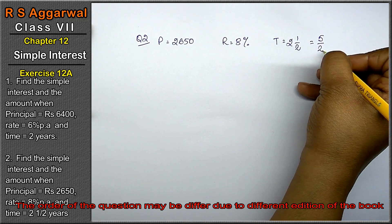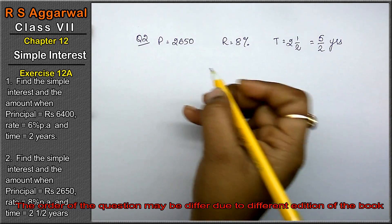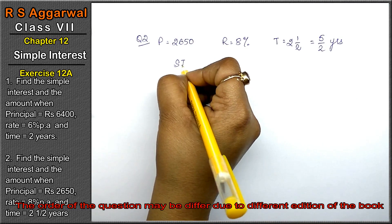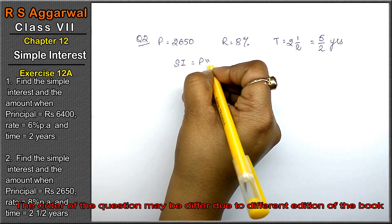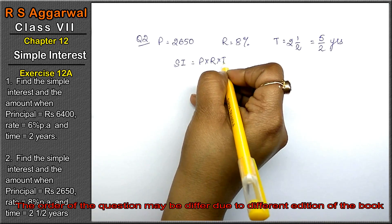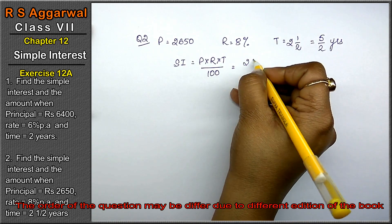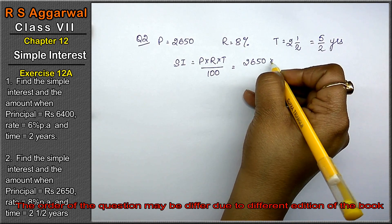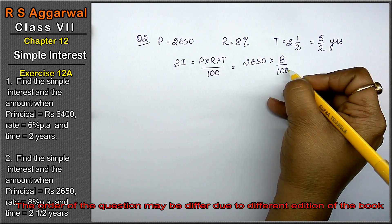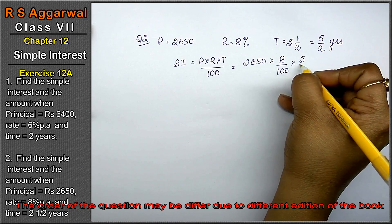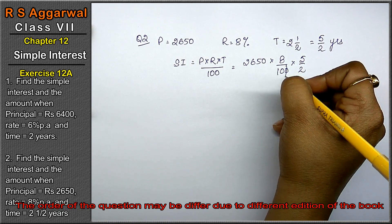Now write the simple interest formula: P into R into T upon 100. P is 2650, R is 8%, and time is 5 upon 2.